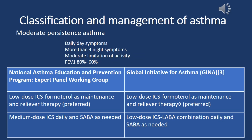Moderate persistent asthma: daily daytime symptoms, more than four nighttime symptoms per month, moderate limitation of activity, FEV1 between 60–80%. NAEPP recommends low-dose ICS plus formoterol as maintenance and reliever therapy, or alternatively medium-dose ICS daily and SABA as needed. GINA recommends low-dose ICS plus formoterol as maintenance and reliever therapy (preferred), or low-dose ICS-LABA combination daily and SABA as needed. Both guidelines recommend low-dose ICS plus formoterol as first-line treatment for moderate persistent asthma.